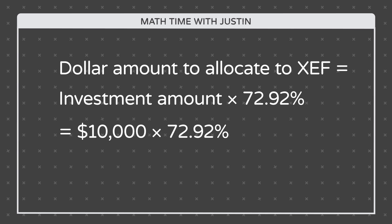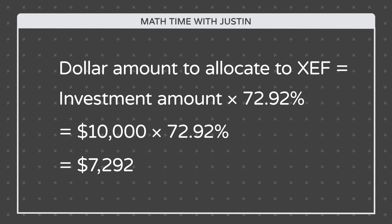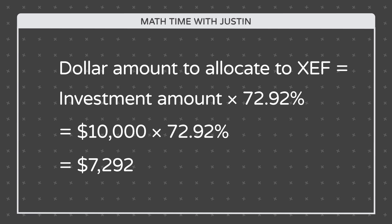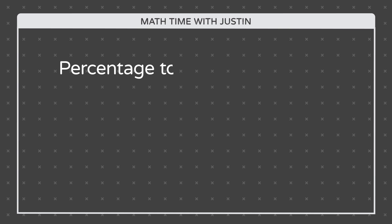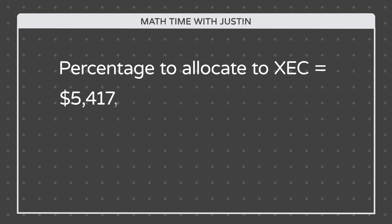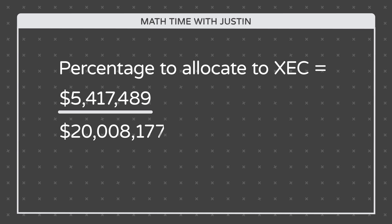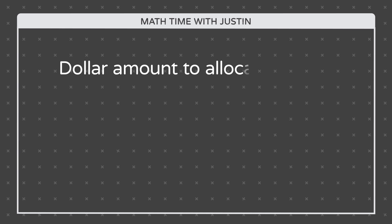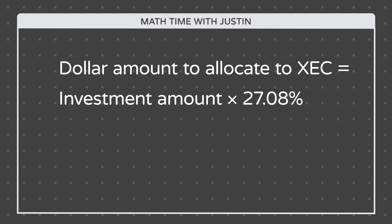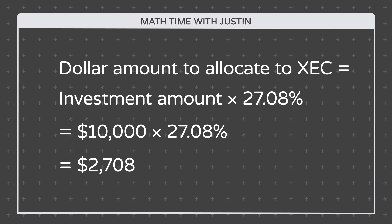If you're investing $10,000 into both iShares International and Emerging Markets Equity ETFs, you'd purchase about $7,292 of XEF, which is your $10,000 investment amount multiplied by 72.92%. The rest of the $10,000, or $2,708, could go to XEC. You can verify that by dividing the $5,417,489 market cap of the MSCI Emerging Markets IMI Index by the $20,008,177 total market cap to equal 27.08%, then multiplying your $10,000 investment amount by 27.08%, which equals $2,708.